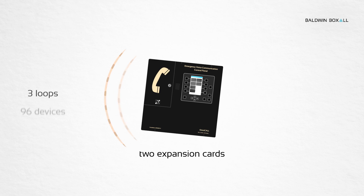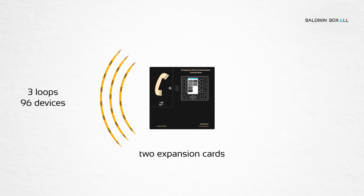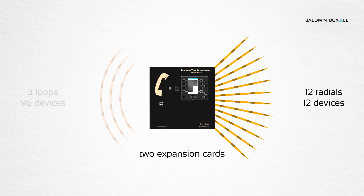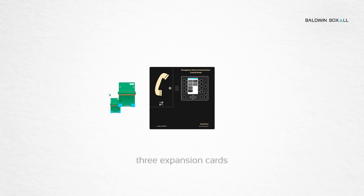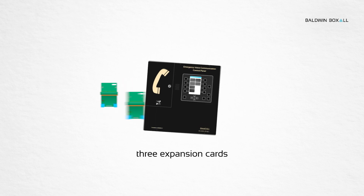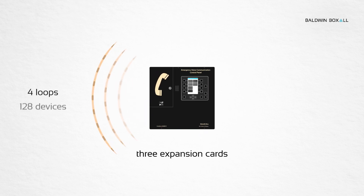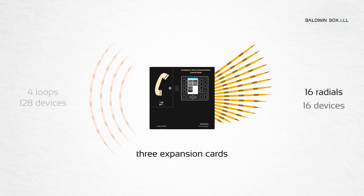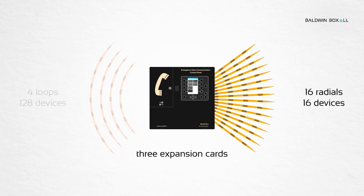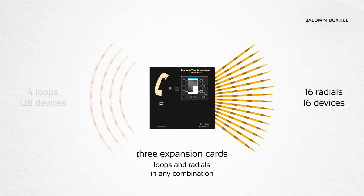Two cards give you up to three loops or 12 radials, or any combination in between. And three cards expand your options up to four loops or 16 radials, again in any combination.